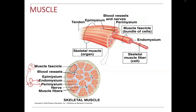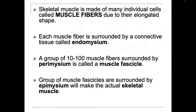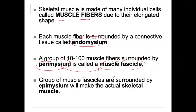The perimysium makes up a fascicle — you can see that layer. Then the epimysium goes all the way around. From this view: endomysium, perimysium, epimysium. A tendon attaches to bone. The skeletal muscle is made up of individual cells called muscle fibers. Each muscle fiber is surrounded by connective tissue called an endomysium. A group of 10 to 100 muscle fibers surrounded by a perimysium is called a fascicle. A group of fascicles is surrounded by its layer called an epimysium.